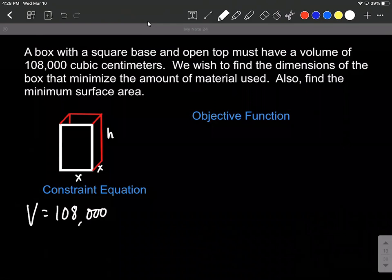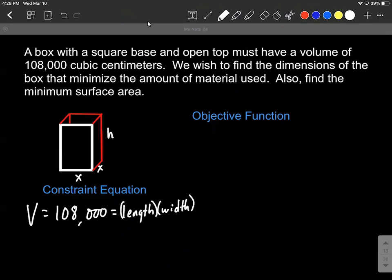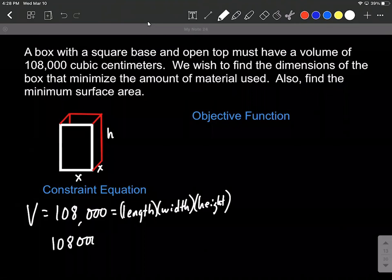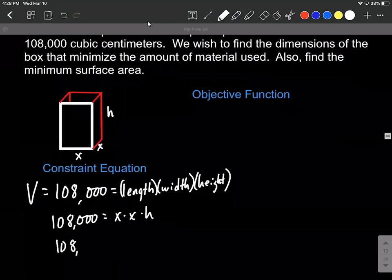Now with the box what we want to do is to calculate the volume that's going to be given by length times width times height. So we want to represent this using the variables that we already have. So we have 108,000 has to equal length times width times height or that can be written as x squared times h on the right hand side. So we have our constraint equation. We've simplified down as much as we can right now.